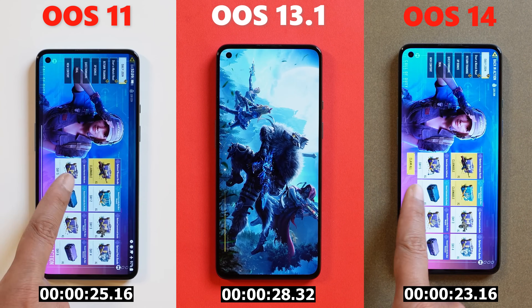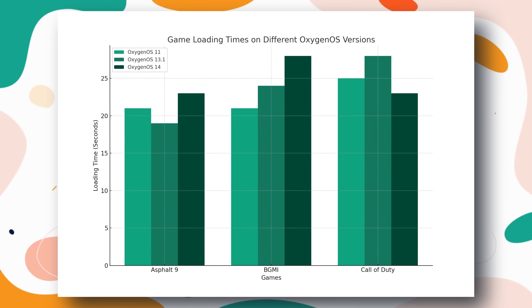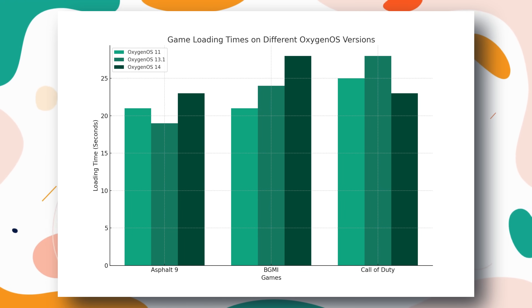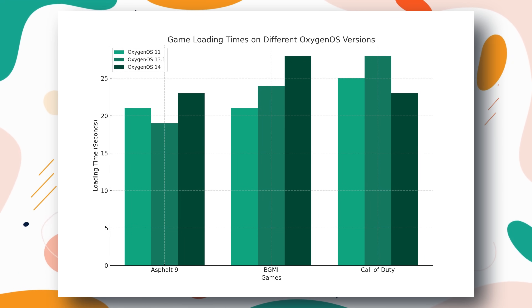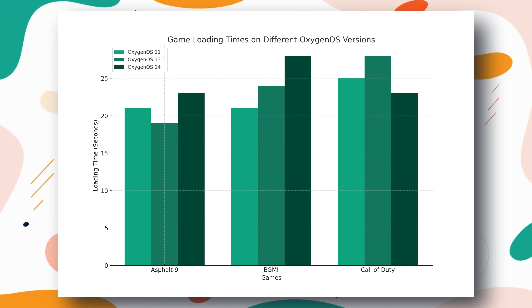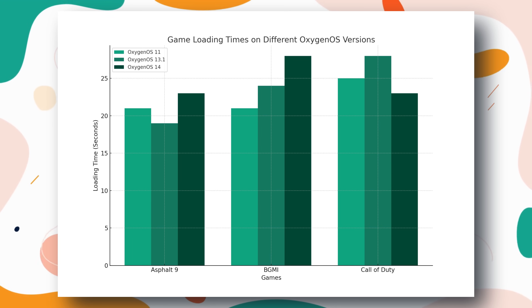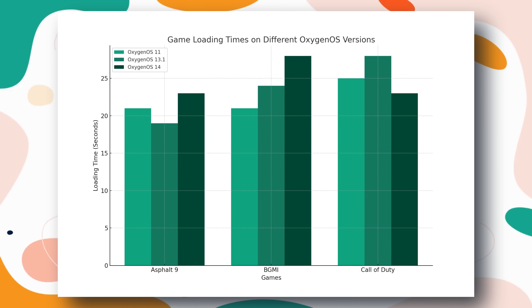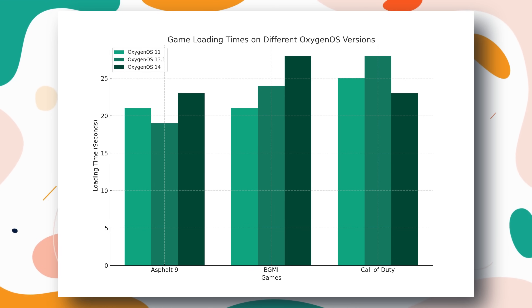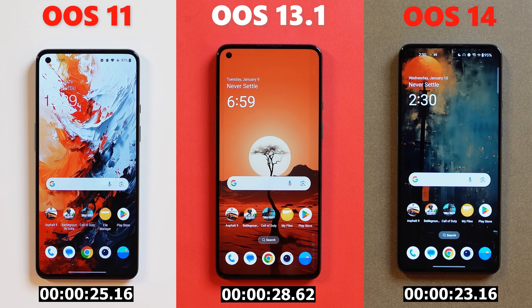Based on the timing taken to load the games, OxygenOS 11 generally performs better in terms of loading games faster compared to the other two versions. It had the shortest or equal shortest loading time for 2 out of 3 games tested.